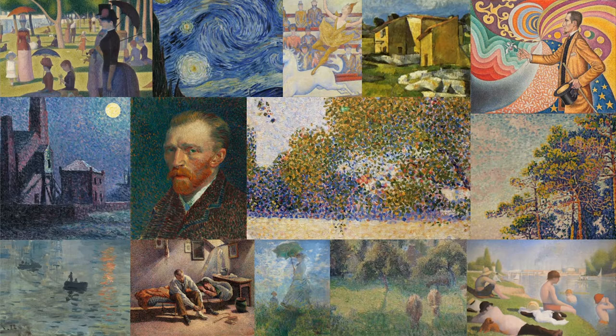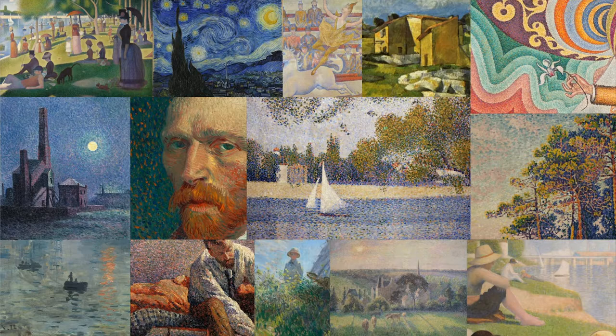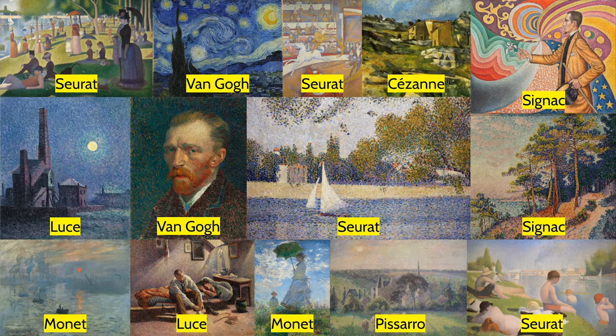Let's see if any of you guys got some of these artists right. I know there were a couple of pieces in here that were recognizable — at the very least one I would think you guys would know. So the names are: Seurat, Van Gogh, Signac, Pissarro, Luce, and Cézanne. They are the main players in impressionism and post-impressionism in France.